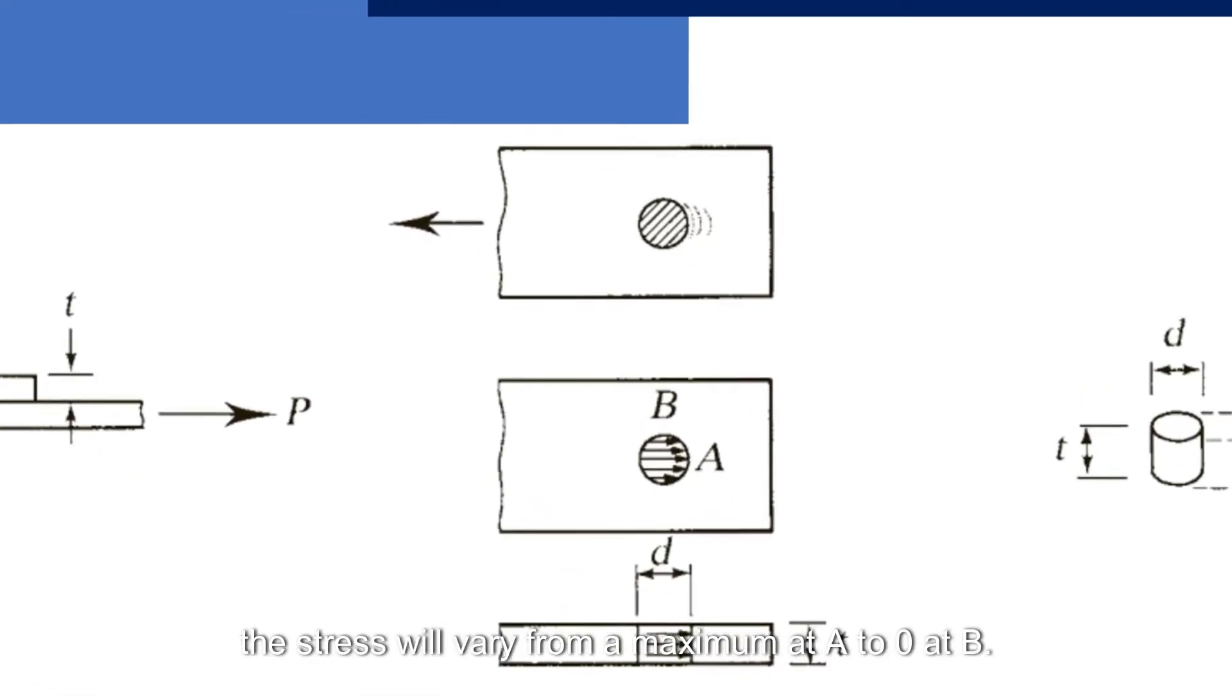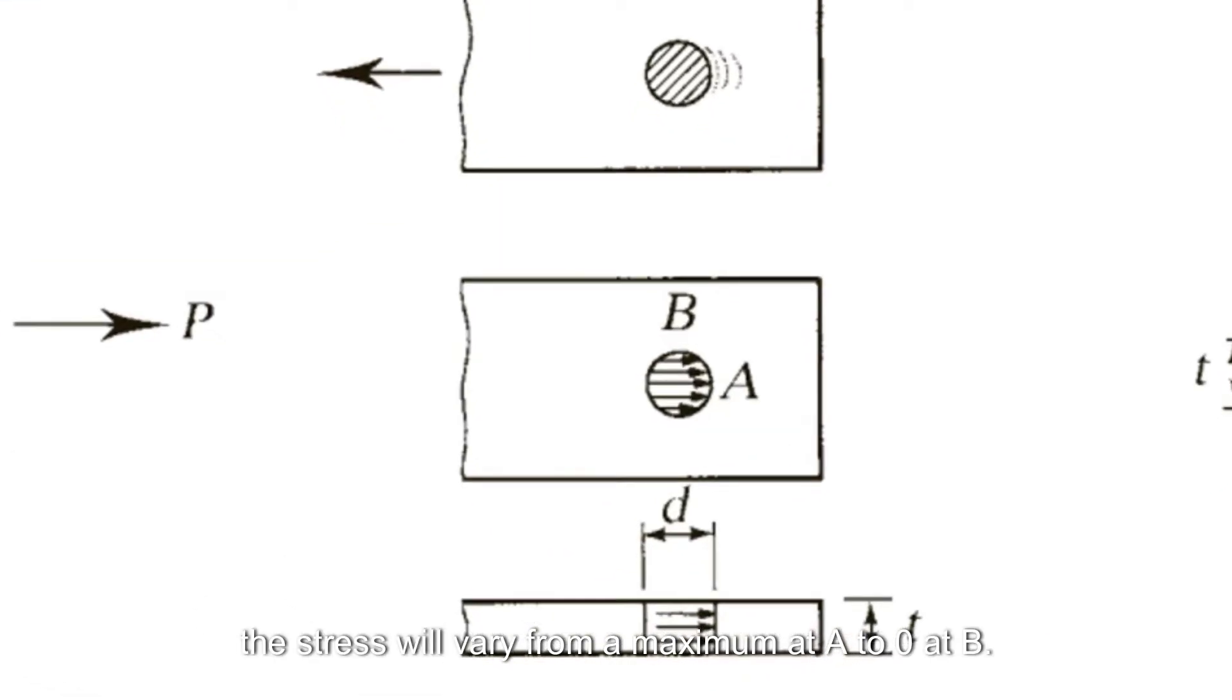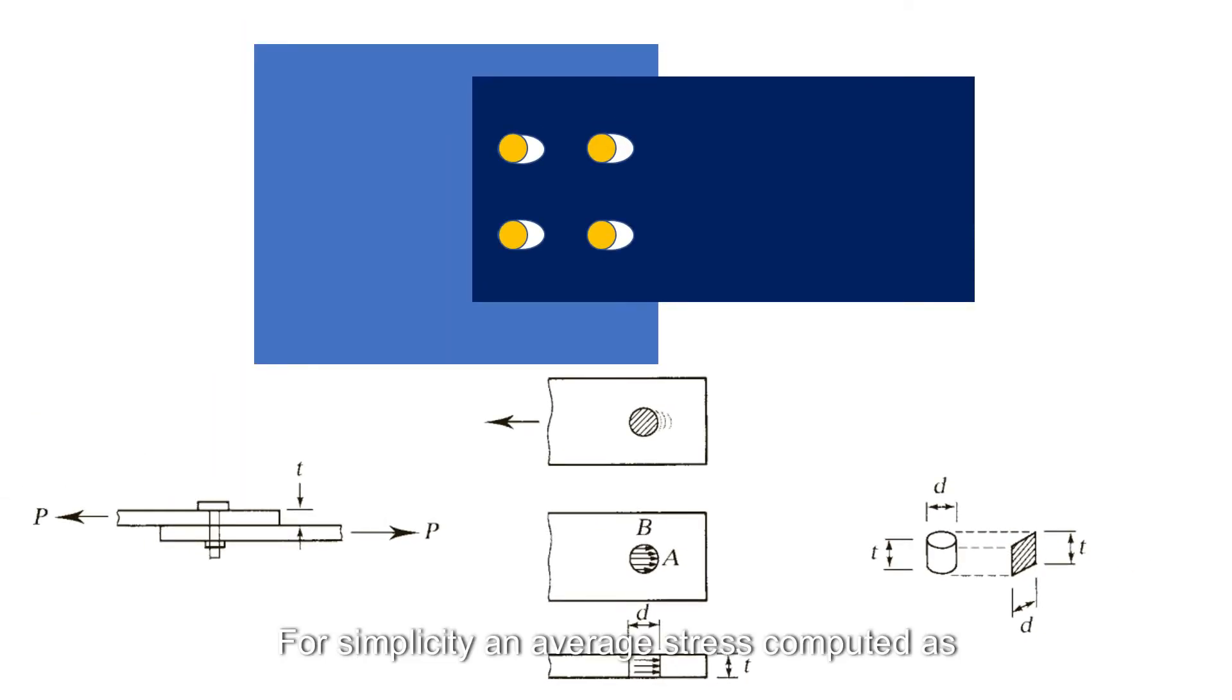The stress will vary from a maximum at A to 0 at B. For simplicity, an average stress computed as the applied force divided by the projected area of contact is used. Thus, the bearing stress would be computed as P divided by D times T, where P is the force applied by the fastener, D is the fastener diameter, and T is the thickness of the parts subjected to the bearing.